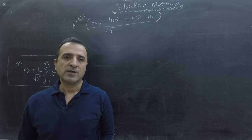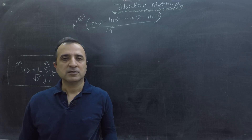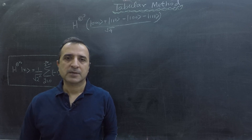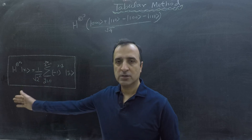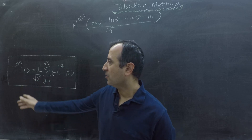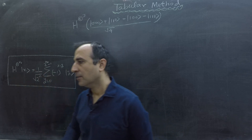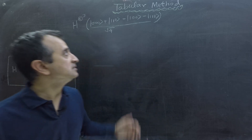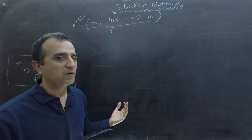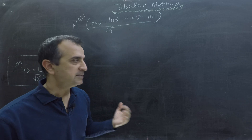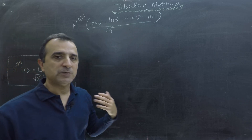In the previous videos we learned how to apply the Hadamard gate on a qubit. We have a formula we can use to apply the Hadamard gate on qubit X and find our answer. But now we are given an equation where we have a superposition of multiple qubits and we have to apply the Hadamard gate on this superposition.